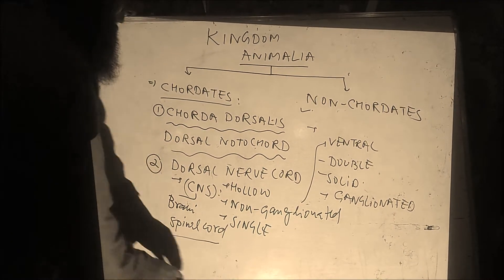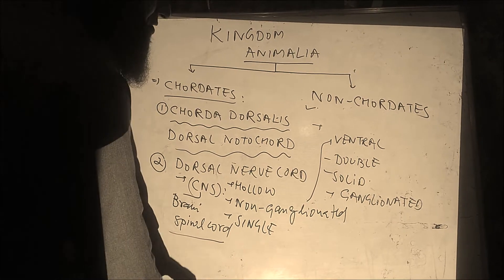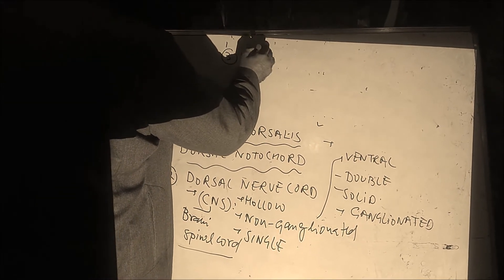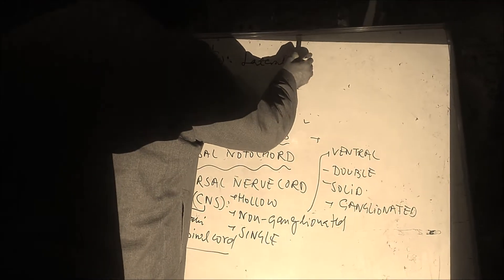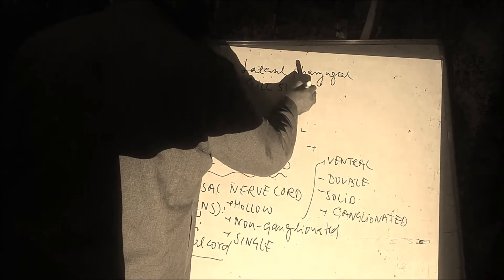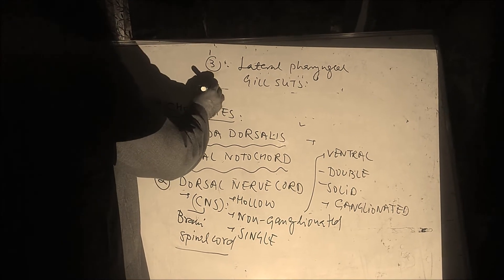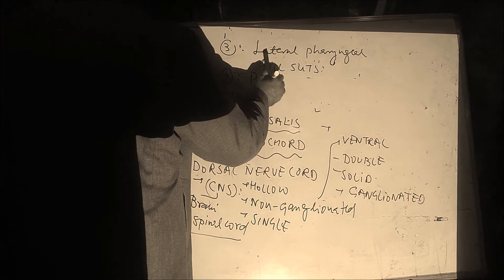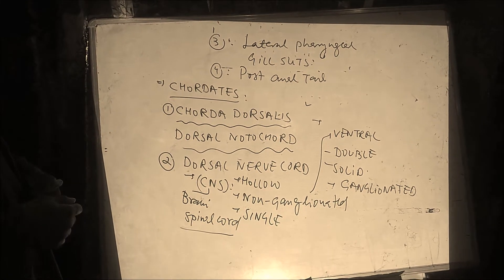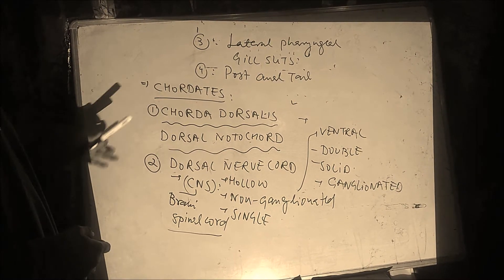The third character, which is present in Chordates but absent in Non-Chordates, is the Lateral Pharyngeal Gill Slits. And the fourth character is the Posterior Post-Anal Tail. This is one more character which is found in Chordates, and these four characters make a Chordate different from a Non-Chordate.